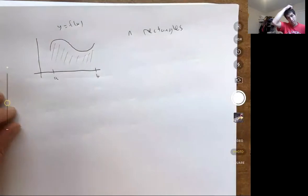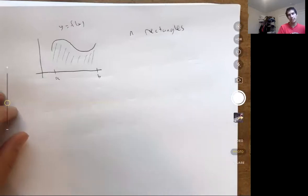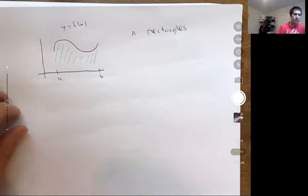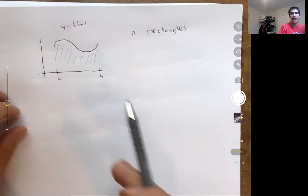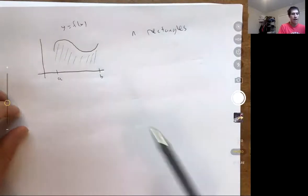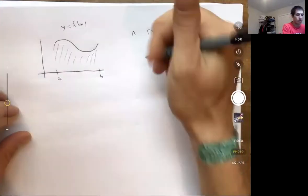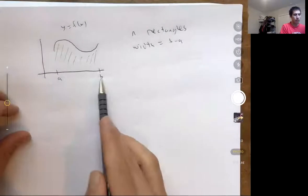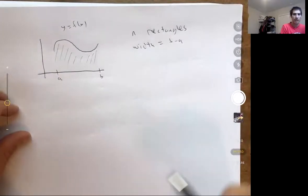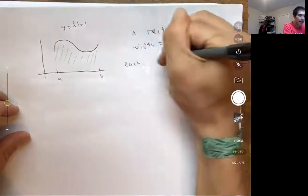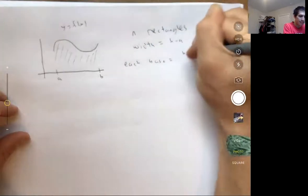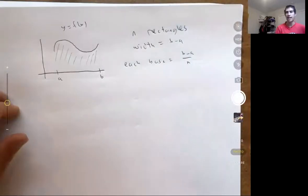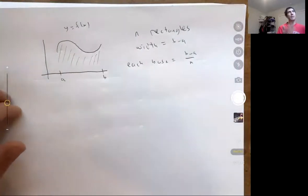To compute the area of each rectangle, I need to multiply the base times the height. I'm going to divide up my interval into n evenly spaced intervals, so each base is going to be the same. My total width is b minus a, and I'm using n rectangles, so each base will be b minus a divided by n — cutting it into n equally spaced pieces. Each rectangle has the same base, which makes it slightly easier.